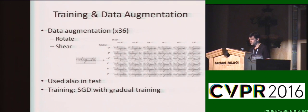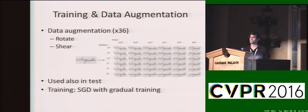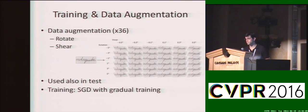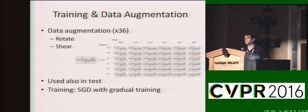We use standard stochastic gradient descent for training, and we do gradual training over the fully connected branches. This means we first train using one fully connected branch, and once it converges, we add another fully connected branch and continue training. We found this gradual way of training to produce superior results over training all the attribute groups at once.